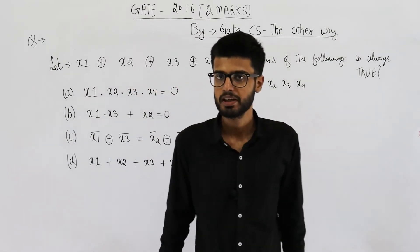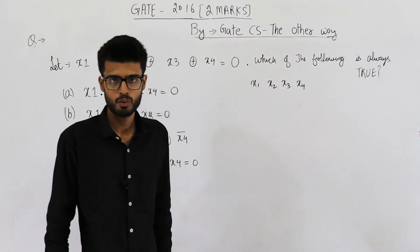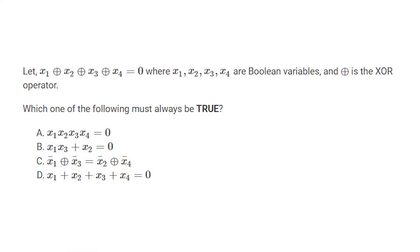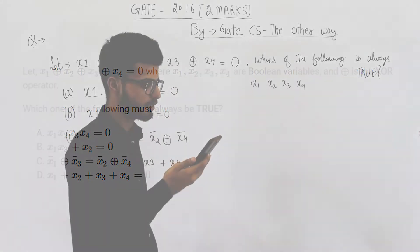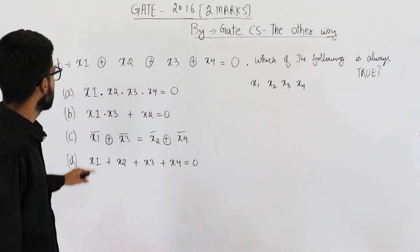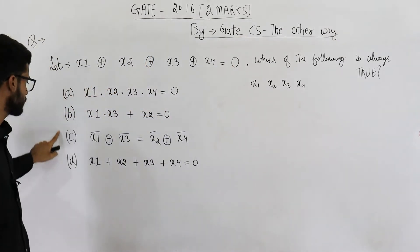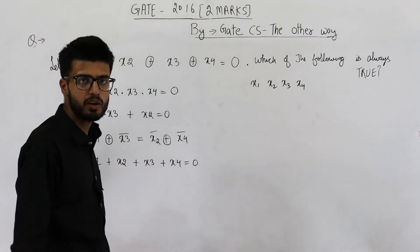Welcome back students. This question is from GATE 2010, exam set 2. Let us have a look at the question and then we are going to solve it. Let x1 XOR x2 XOR x3 XOR x4 equal to 0, where x1, x2, x3, x4 are boolean variables and XOR is the XOR operator. Which one of the following must always be true?